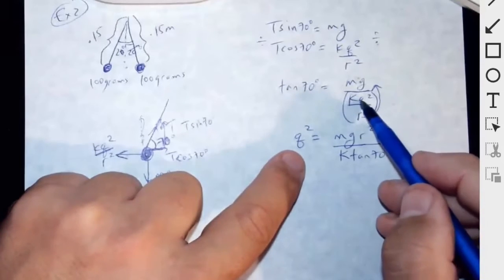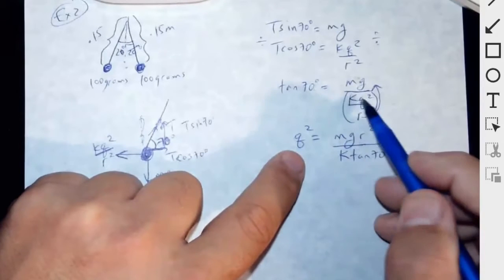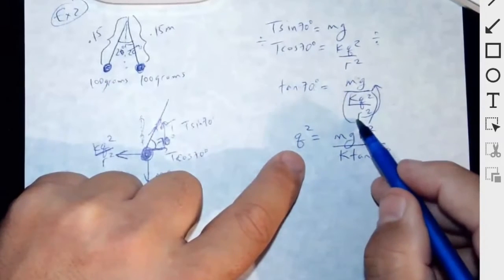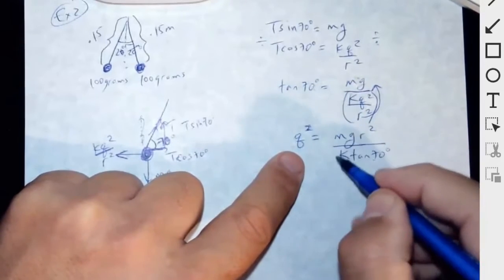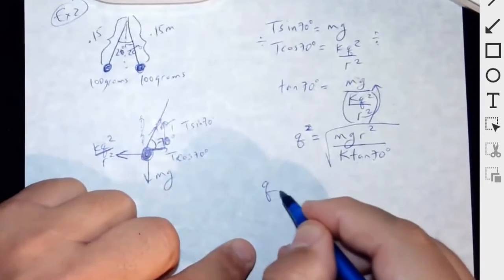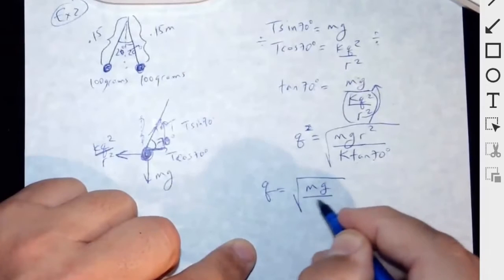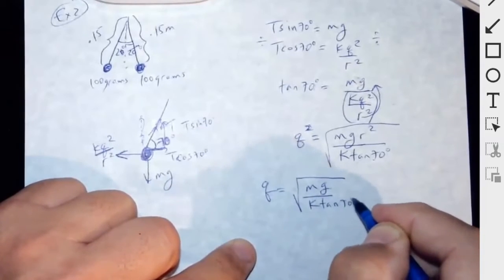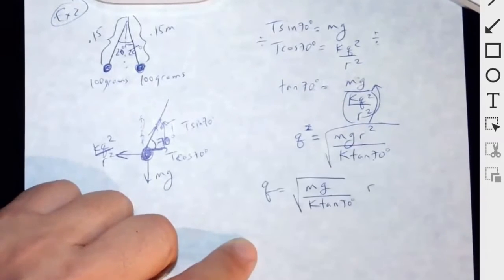Let's make sure we did that right. Q squared goes here. This guy comes down here. So then K tangent 70 and then R squared goes up to the top. Then I take the square root of everything. So then we have Q is equal to square root of Mg over K tangent 70. Then the R squared comes out of the square root and you're just left with R.